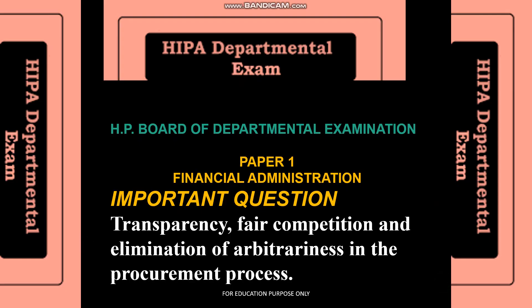Welcome to the next video tutorial of HB Board departmental examination paper 1, financial administration. In this video we are going to cover another important question that was also asked in the previous examination: how shall transparency, fair competition, and elimination of arbitrariness in the procurement process be maintained?